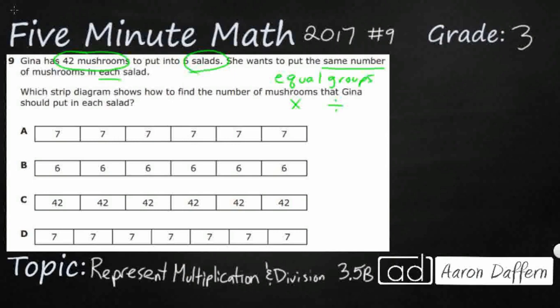These strip diagrams are part of a strip diagram — they don't necessarily have the total; they just have all the parts. A, B, C, and D give us four different options: parts of 7, of 6, of 42. D is also 7, but there are a few more parts. Rather than starting with the answers, let's start to see if we can just make sense of the problem on our own.